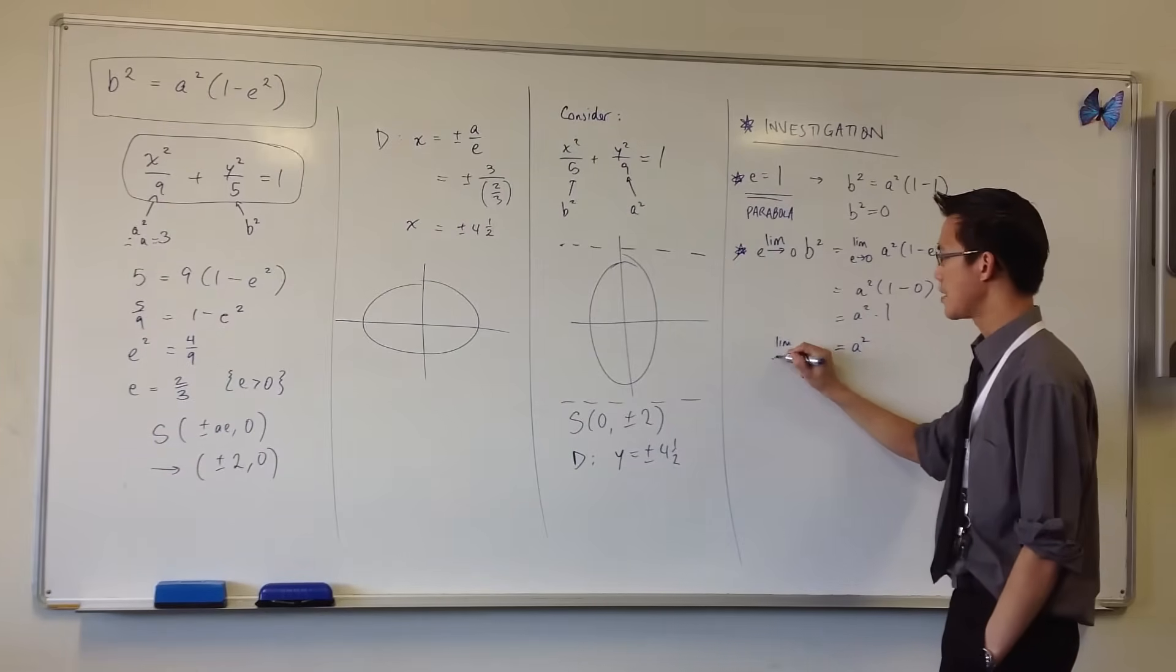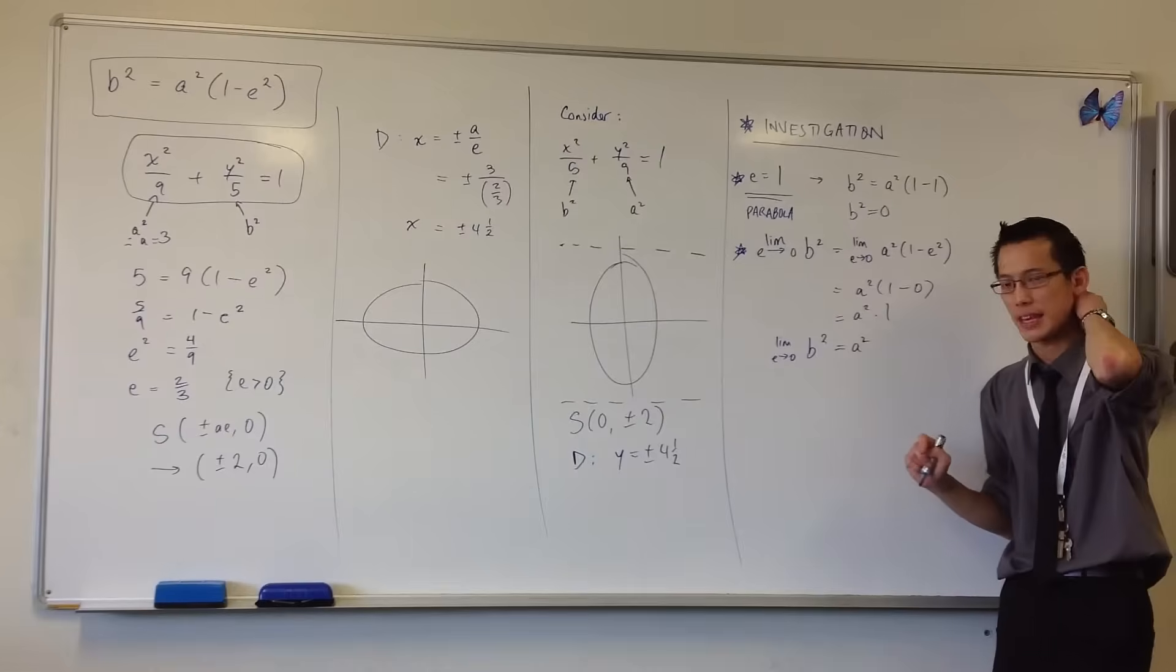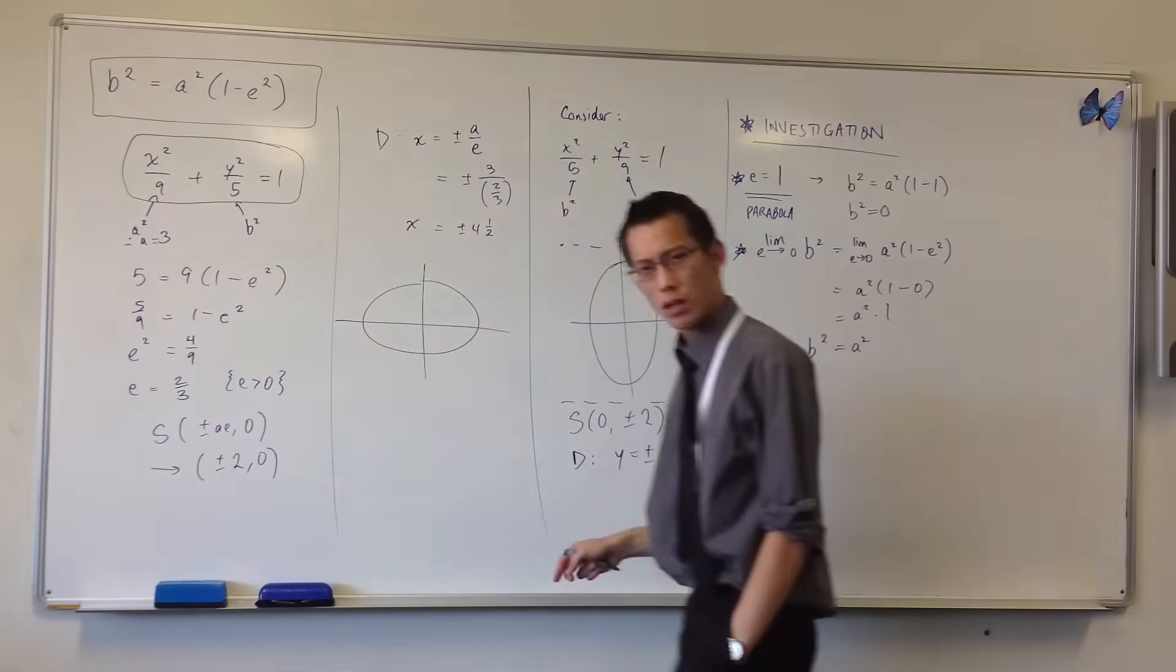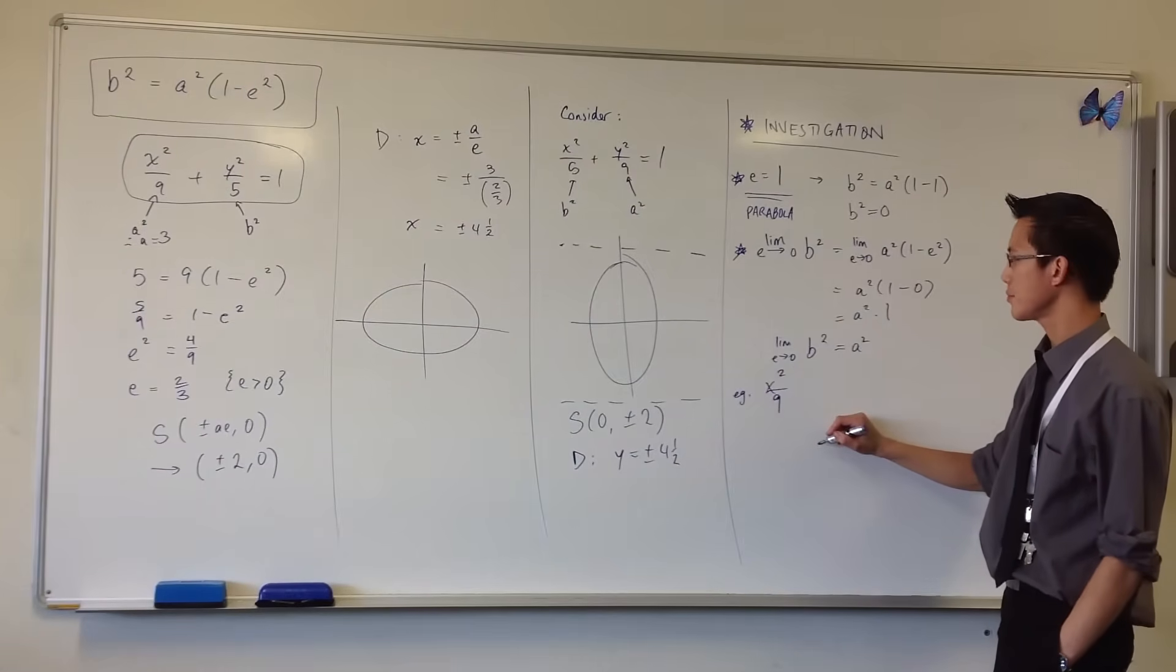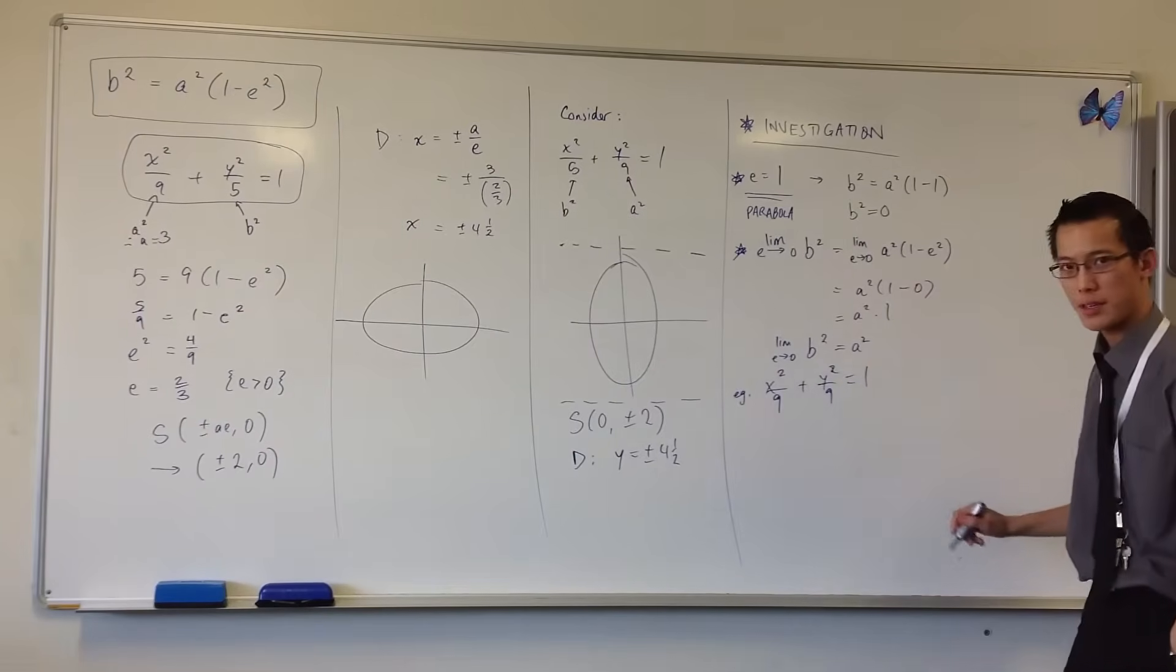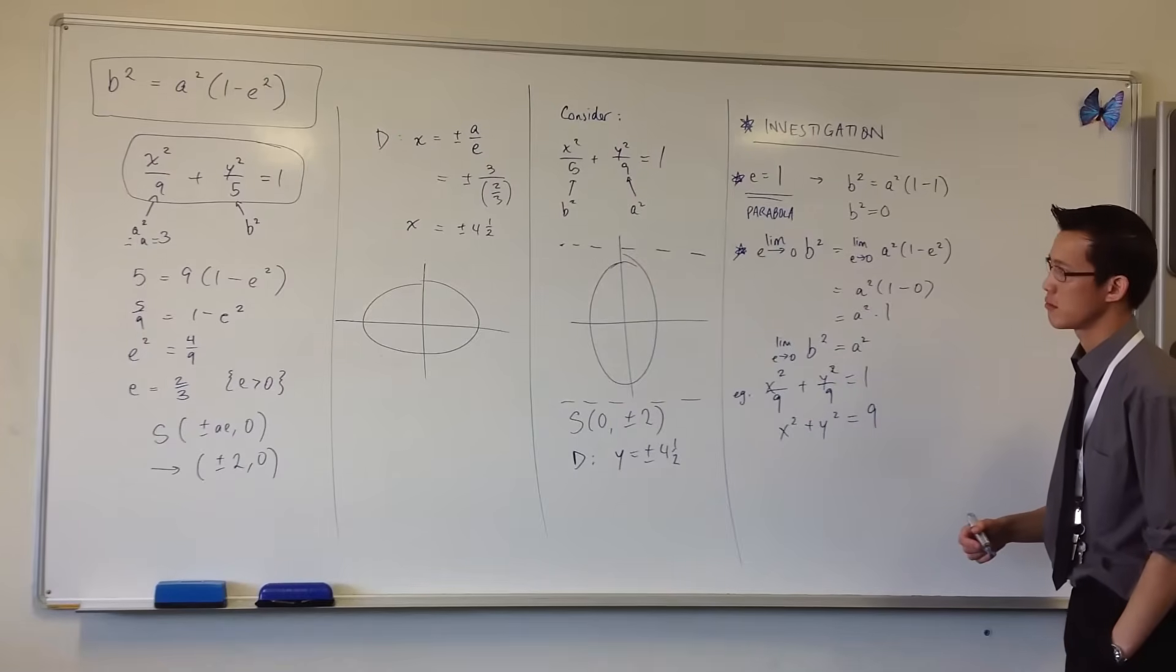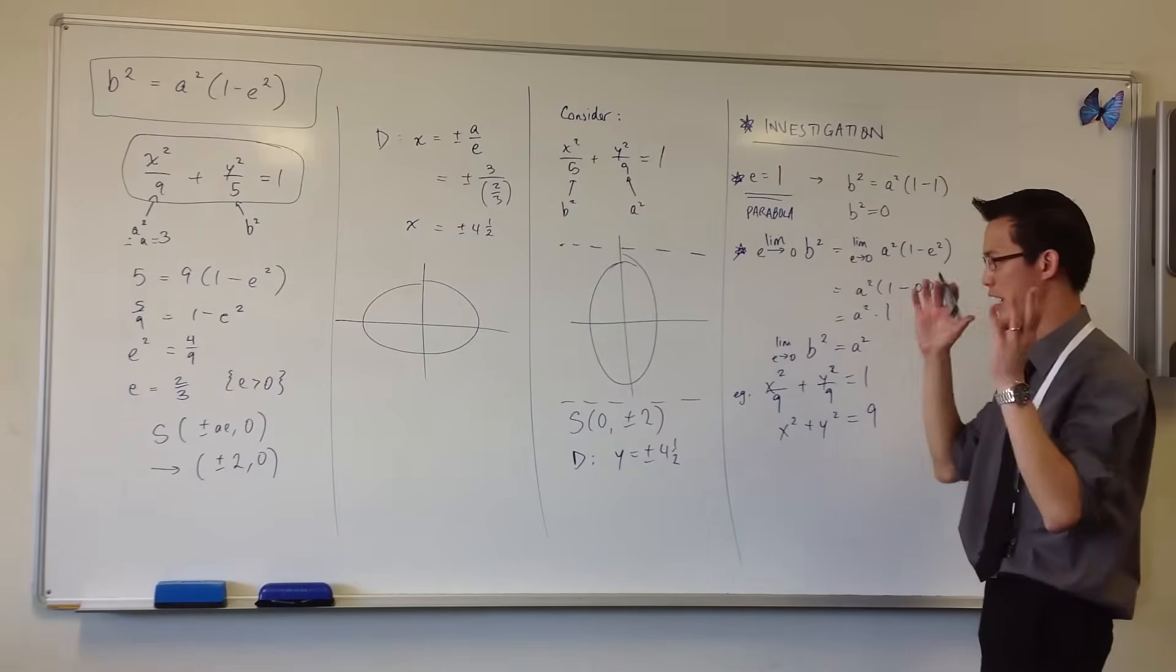What does this tell us? As e approaches zero, b² is going to equal a² when you get there if it were possible. Well, what kind of scenario is this? Well, if we for instance have a look at this, b² approaching a², what kind of shape would you get? This is our example here: you'd have x² on 9 and b² which in that case was 5, but if that's approaching 9 as well, what kind of shape is this? And the answer is, if you multiply through, at least in this case, it's a circle centered at the origin.